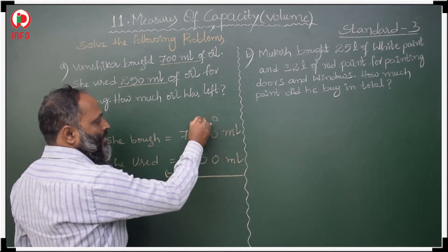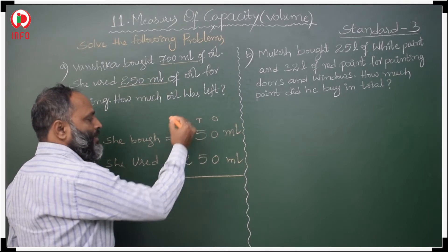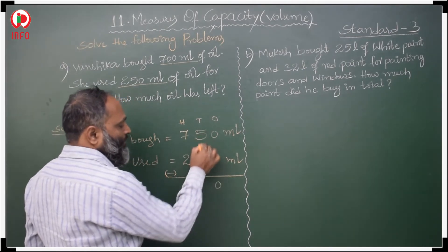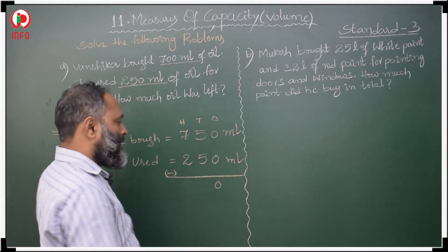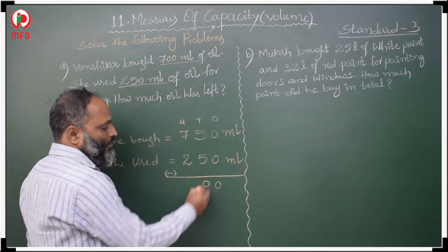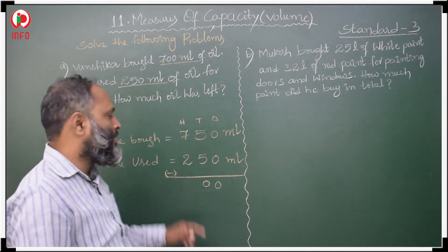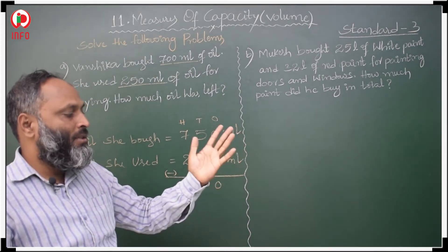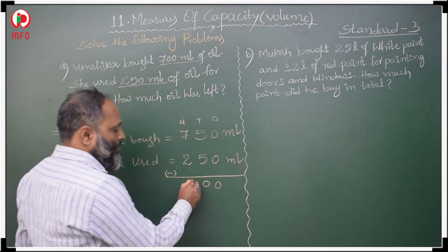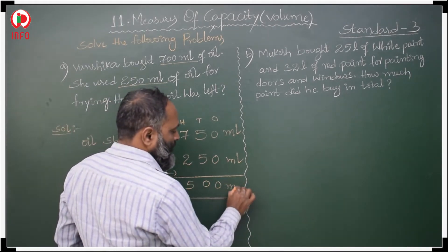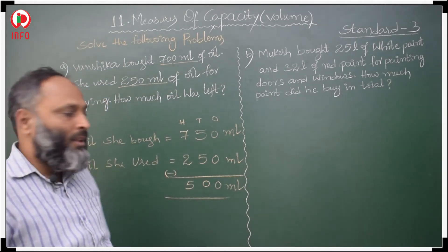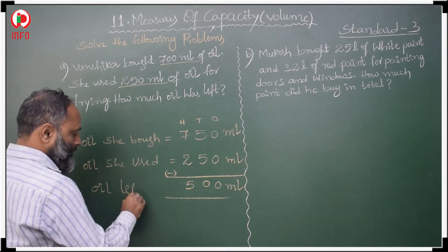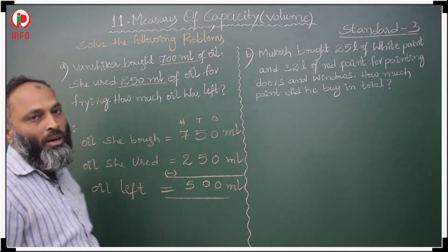Solution: Oil she bought = 750 ml. Oil she used = 250 ml. Subtracting: 0 minus 0 is 0, 5 minus 5 is 0, 7 minus 2 is 5. So 500 ml of oil is left.